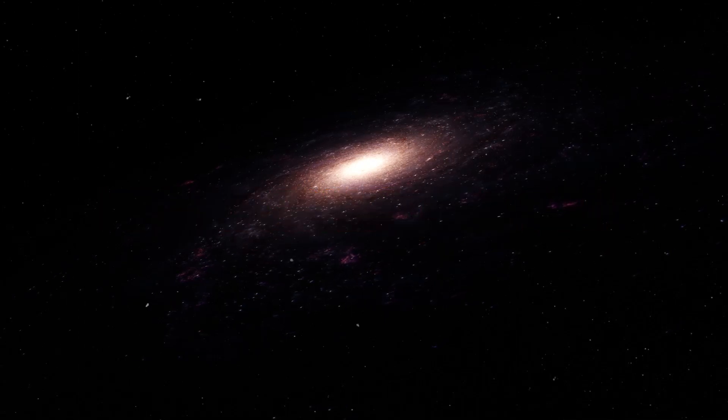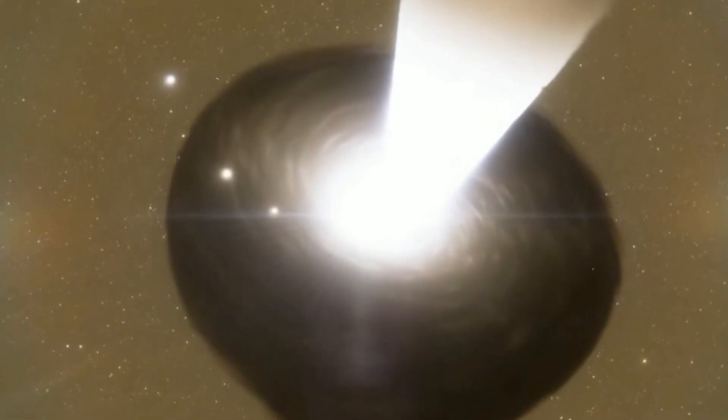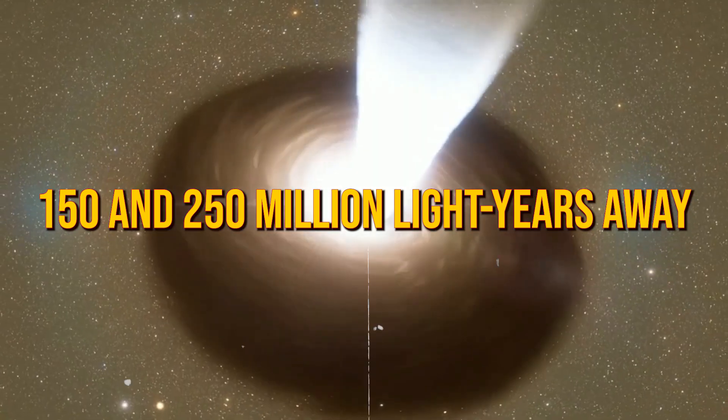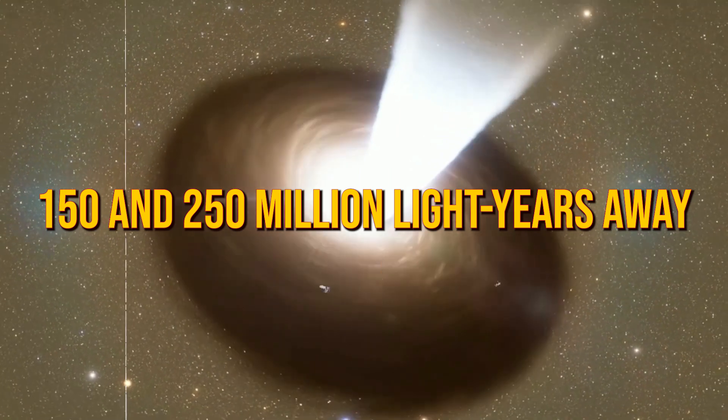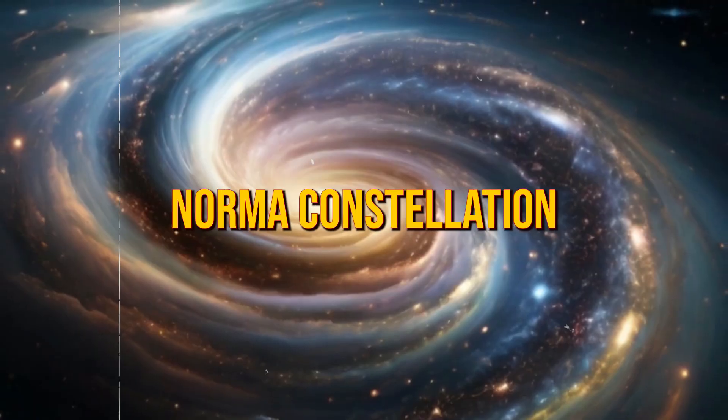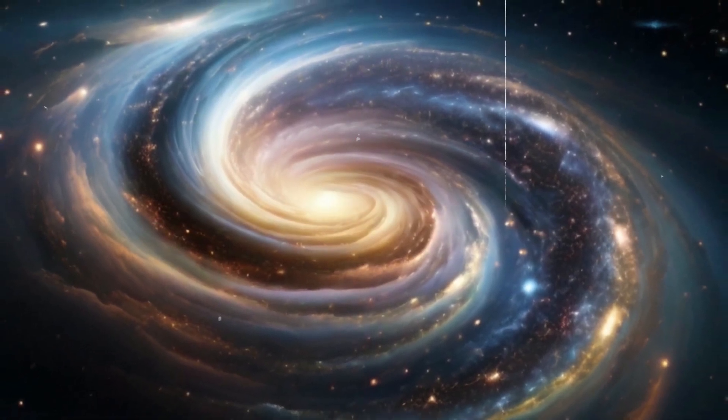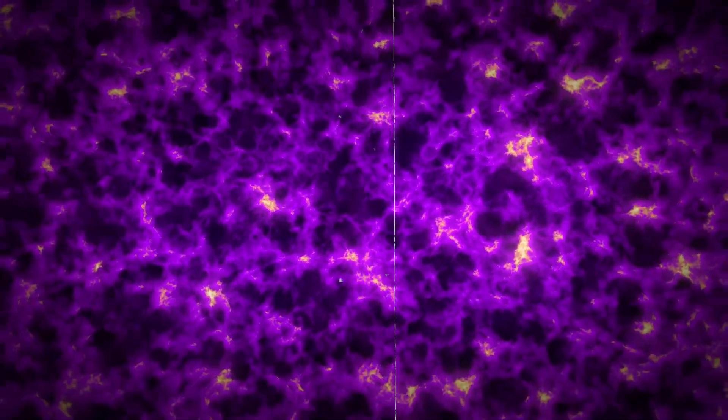It wasn't the most straightforward approach, but it did give us a rough idea of where to find it: somewhere between 150 and 250 million light-years away, toward the Norma constellation. And with that, we began to grasp the sheer magnitude of this cosmic giant for the very first time.